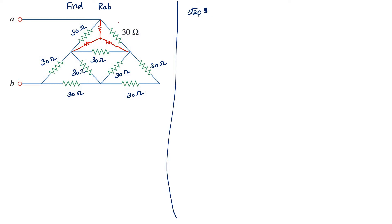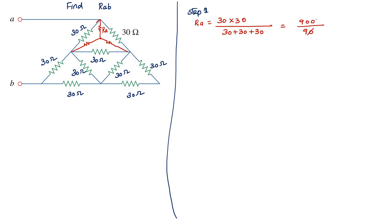See here, all the resistances are 30. To find out Ra, the resistance connected on the side of Ra is 30 into 30, and the total resistance in the delta is 30 plus 30 plus 30. That is 900 divided by 90, which equals 10 ohm. So Ra equals 10 ohm. Then the other resistances are also 10 ohm each, because all resistances are equal.